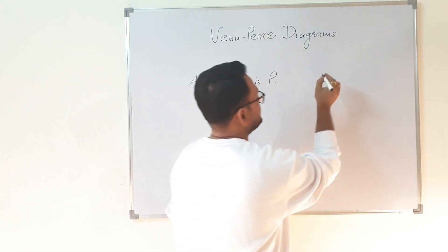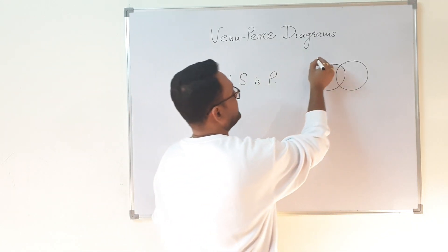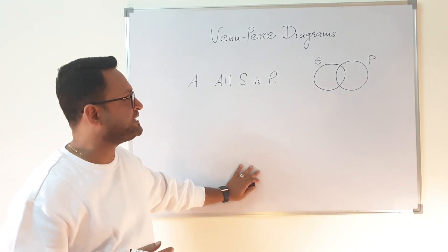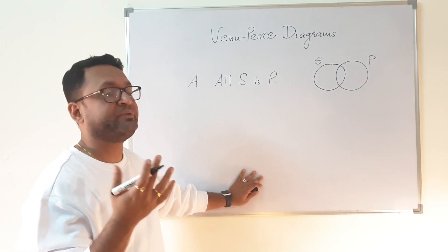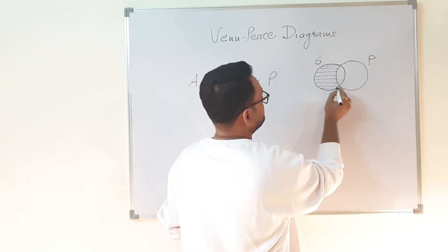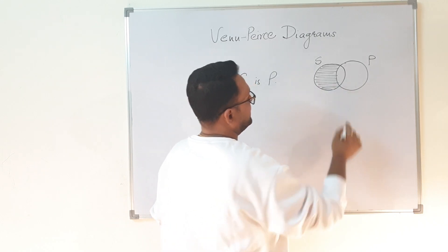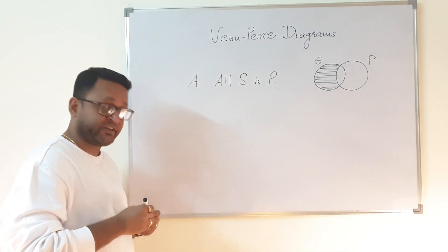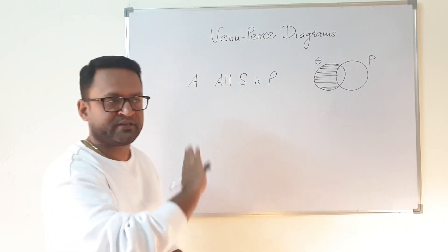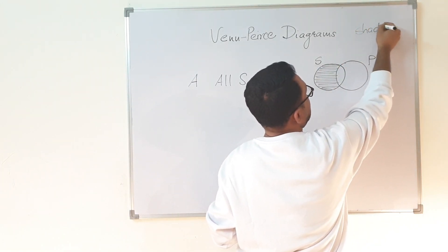Now, how to draw 'all S is P'? Every Venn diagram is drawn as two intersecting circles labeled S and P. When we say 'all S is P,' the part of S which is not in P is empty. To show this emptiness, that region is shaded. I am putting lines here to save time, but in the books or in Venn's own papers of 1880 and 1881 you will find that this part is shaded completely — blacked out.